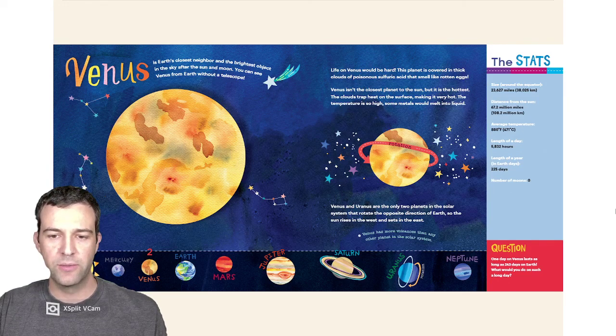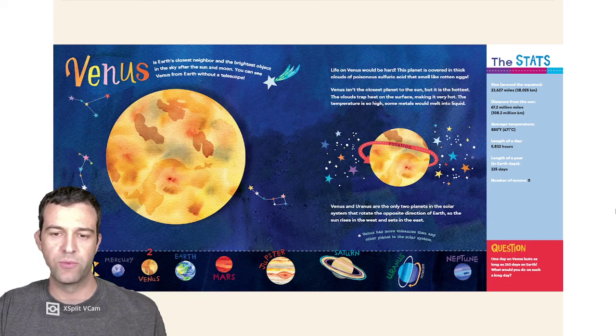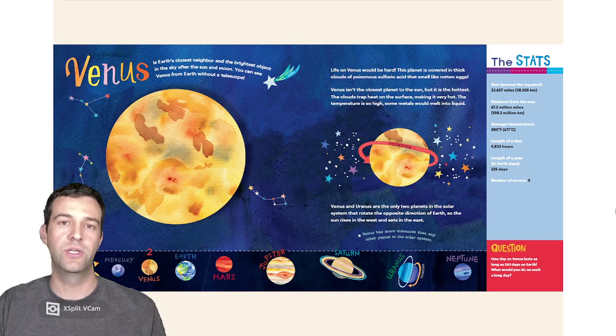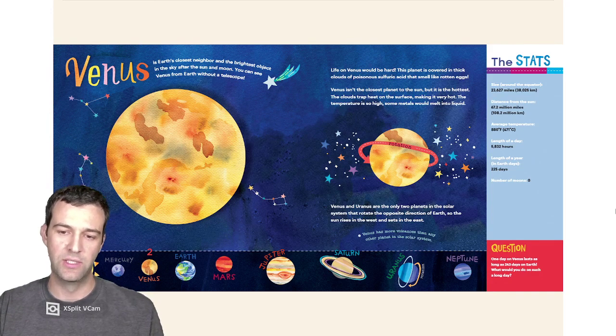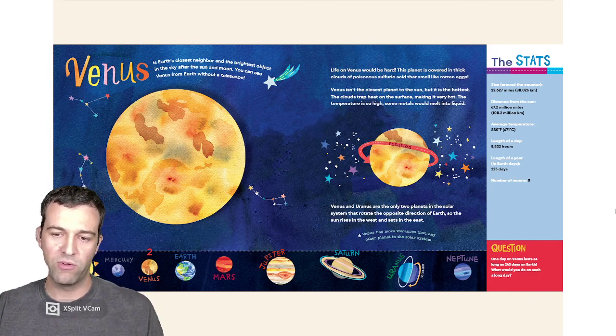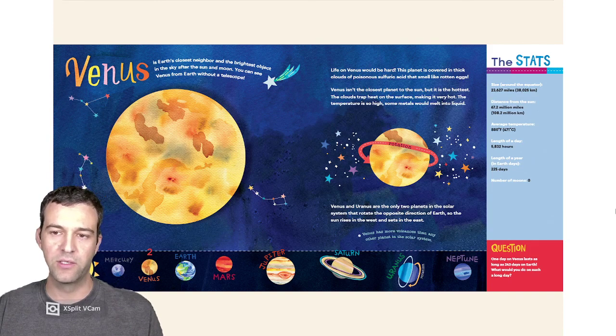Venus and Uranus are the only two planets in the solar system that rotate the opposite direction of Earth, so the Sun rises in the west and sets in the east. Venus has more volcanoes than any other planet in the solar system.